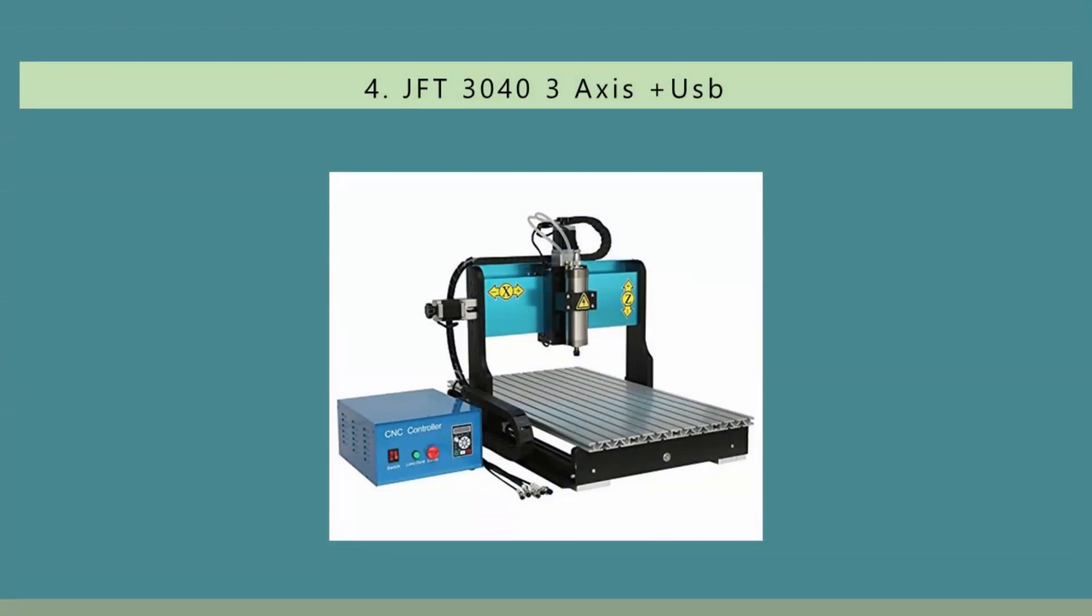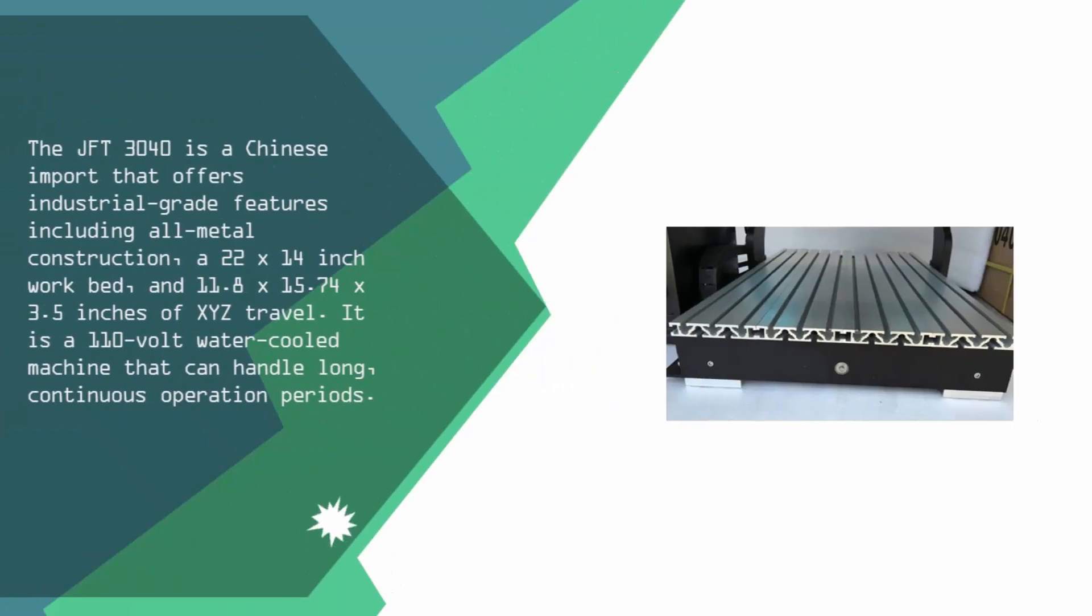At number 4, the JFT3040 is a Chinese import that offers industrial grade features including all metal construction, a 22 x 14 inch workbed, and 11.8 x 15.74 x 3.5 inches of XYZ travel. It is a 110 volt water-cooled machine that can handle long, continuous operation periods.